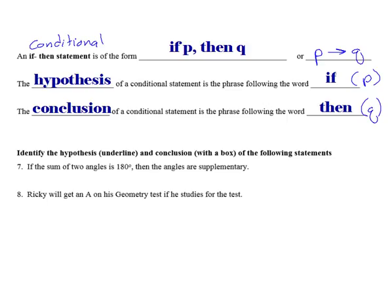So if you take a look at example number seven, we're asked to identify the hypothesis by underlining it, and then the conclusion by drawing a box around it. So it says, if the sum of two angles is 180 degrees, then the angles are supplementary. So notice I have my if, I have my then. That's a conditional statement.